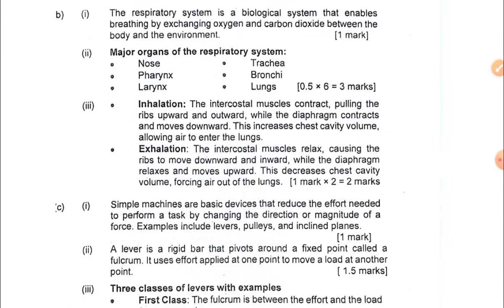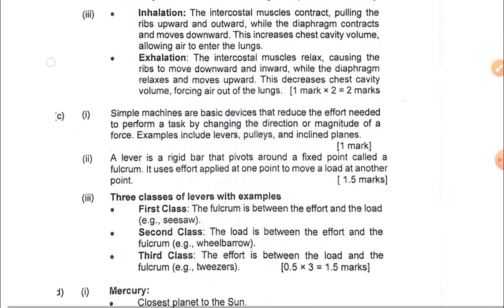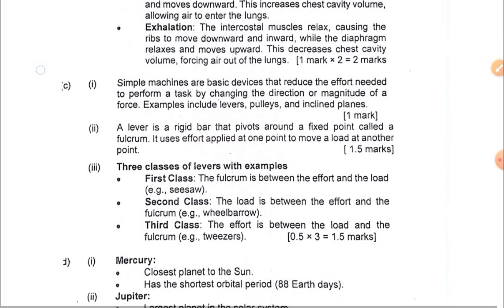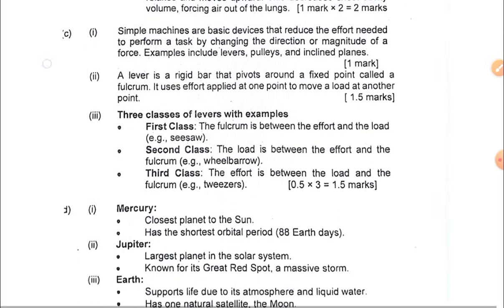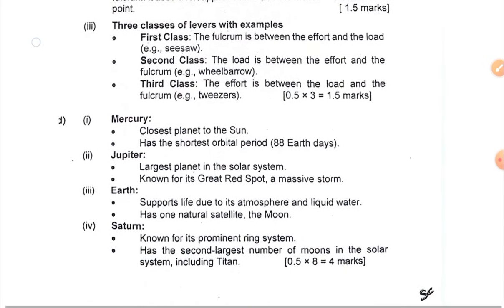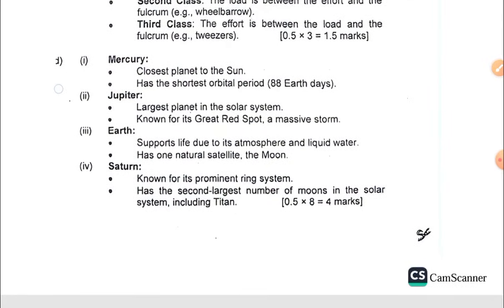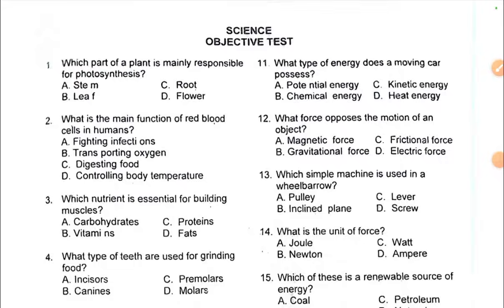For the respiratory system, the major organs are covered along with what happens during inhalation and exhalation. During inhalation, the intercostal muscles contract; during exhalation, they relax. Simple machines cover levers and their classes. The solar system section covers characteristics of various planets including Mercury, Jupiter, Earth, and Saturn.